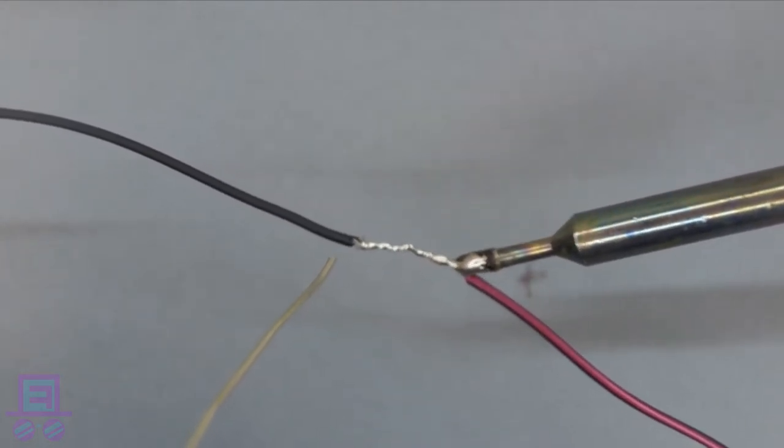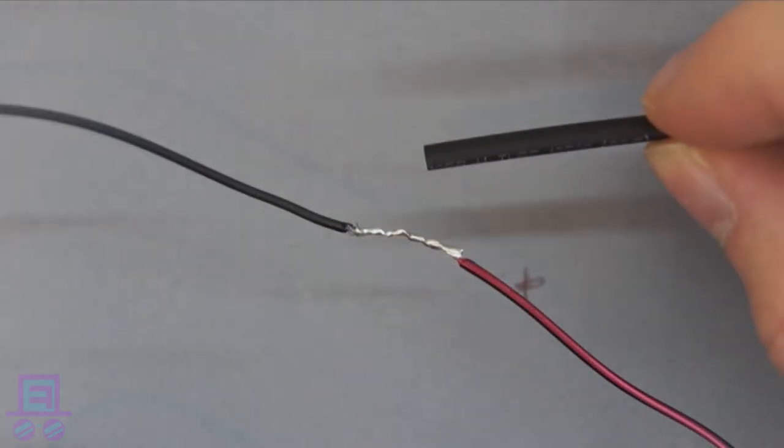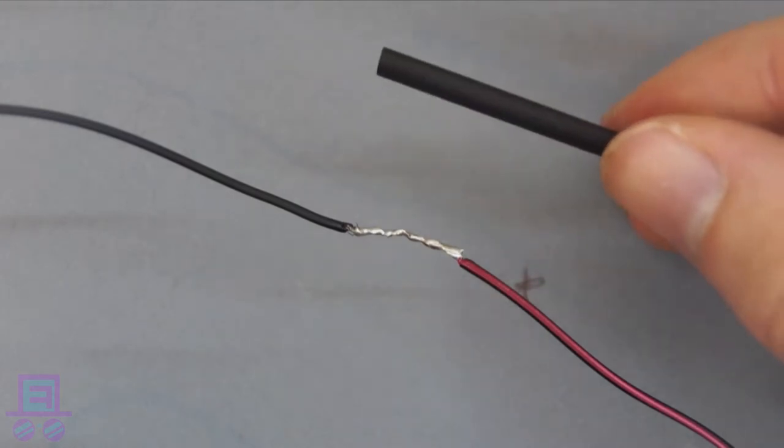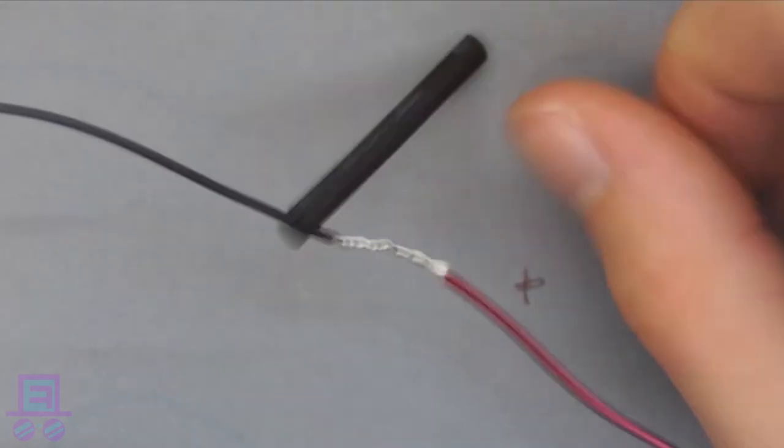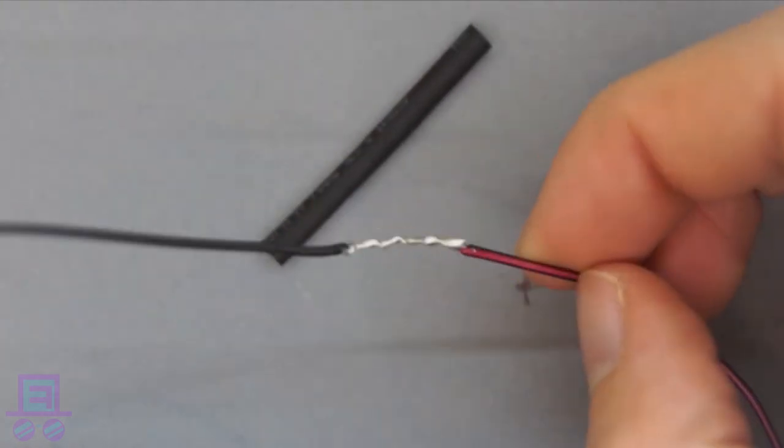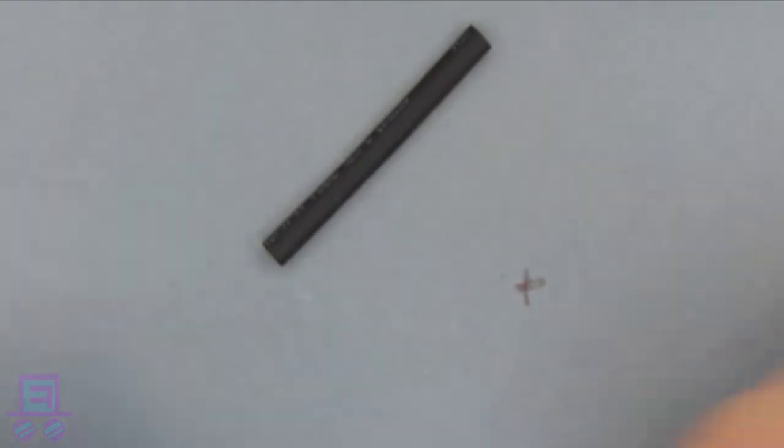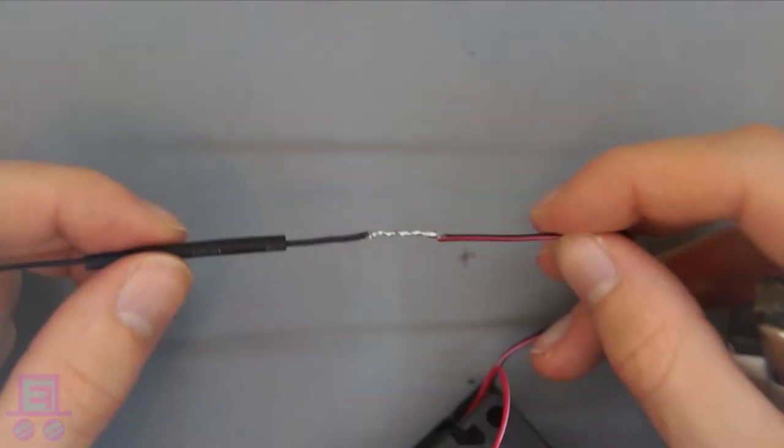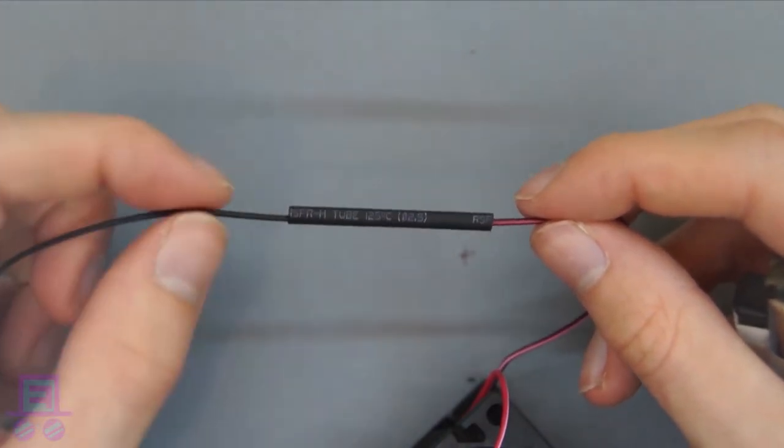And there we have a nice strong solder joint. Next, slide the shrink wrap over the joint. You forgot to slide it over one of the wires before you started, didn't you? I can guarantee this will happen to you at some point. Just remember that we don't make mistakes, just happy little accidents. Once we have the shrink wrap placed over our joint and covering all the bare wire, heat it up by wafting your lighter underneath it.